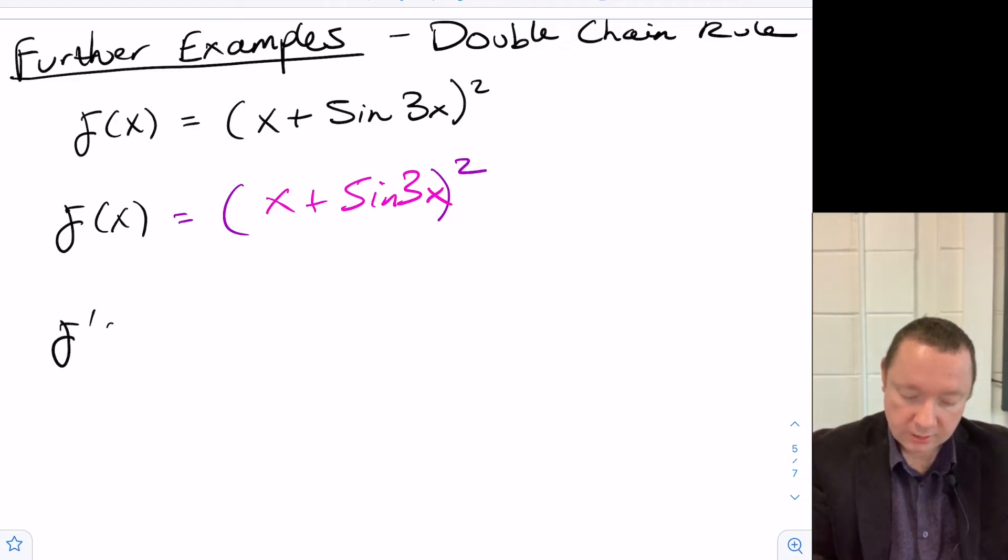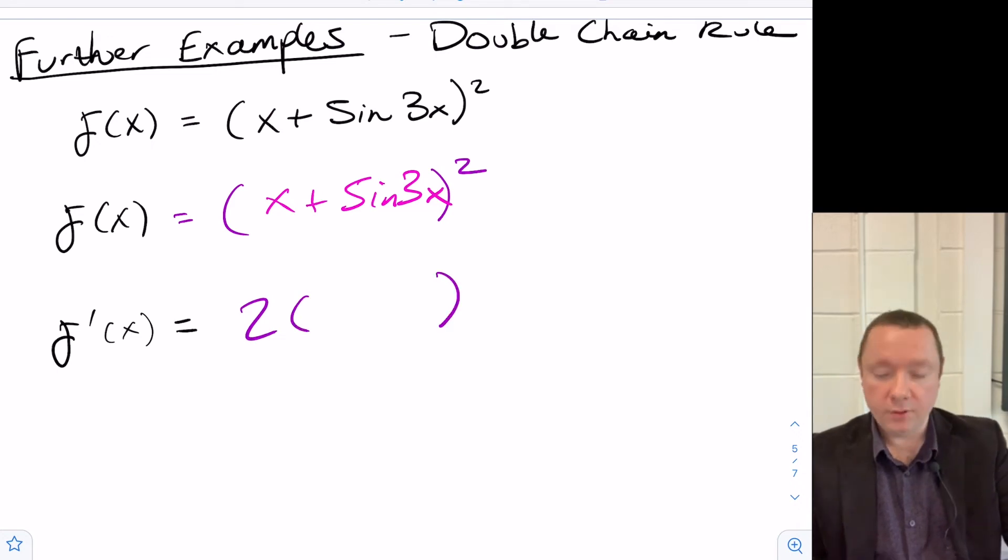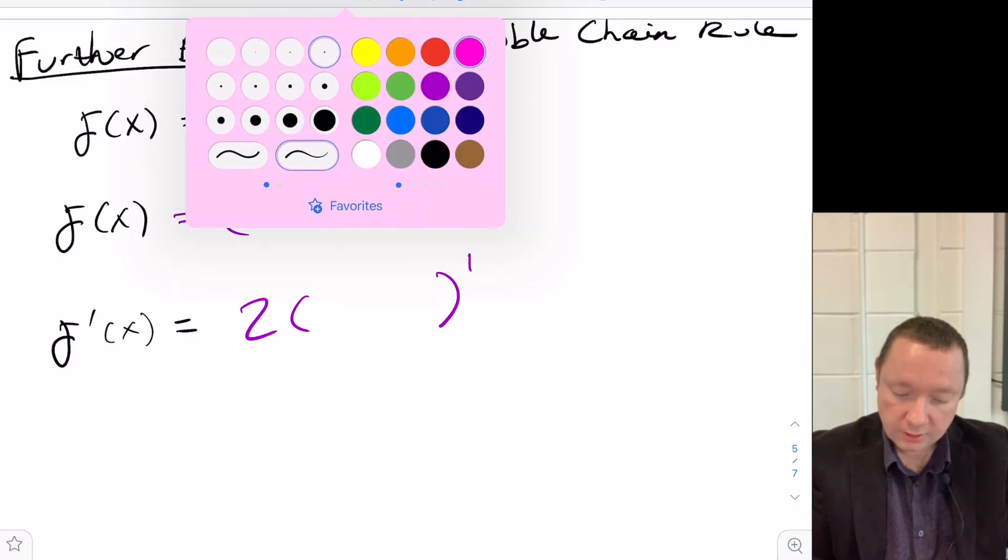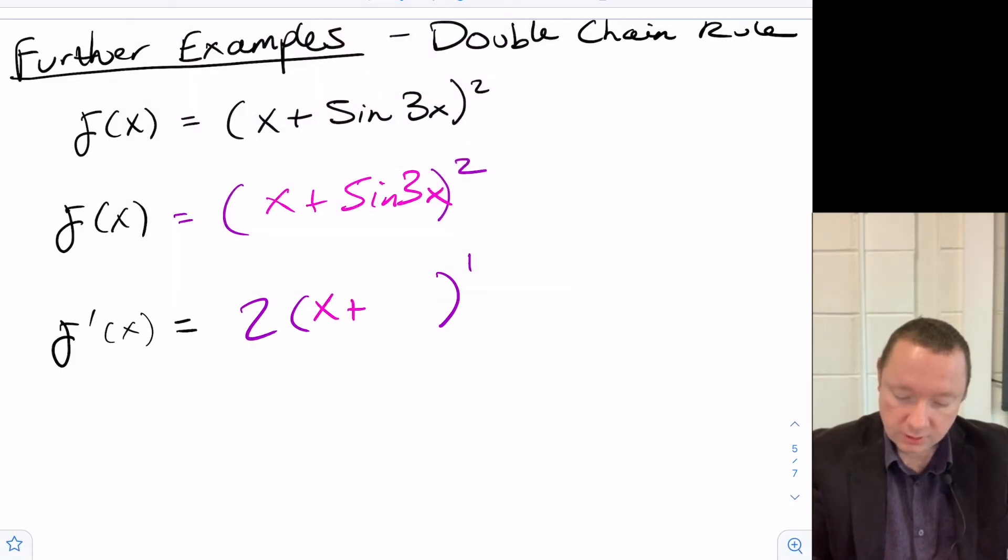So my f'(x), differentiating the outer function, 2 times our inner function, reduce the power by 1, and our inner function stays the same, x plus sine 3x. But now we need to differentiate x plus sine 3x. Differentiate x, you get 1.